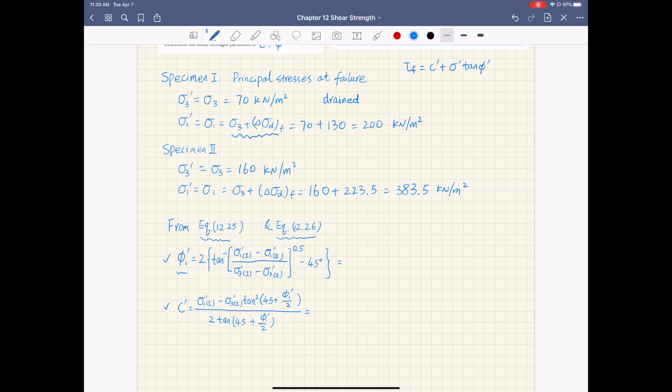If you substitute sigma 1 and sigma 3 prime from two specimens into this expression, you can get phi 1 prime of 20 degrees. And then the C' value is 20 kN per meter square.